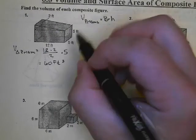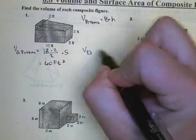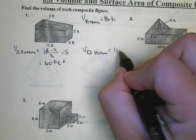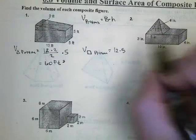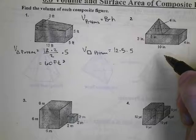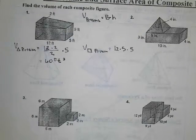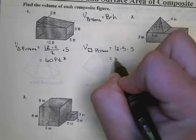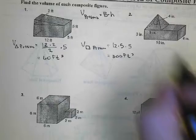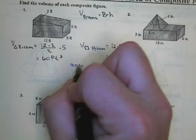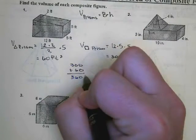Now to find the volume of the rectangular prism, we take the base area — that's 12 times 5 — then multiply by the height of that box, which is also 5. So 12 times 5 times 5 gives us 300 feet cubed. To find the total volume, we add the two together: 60 plus 300 gives us 360 feet cubed.